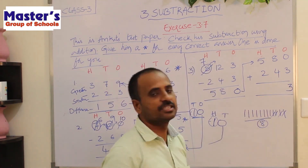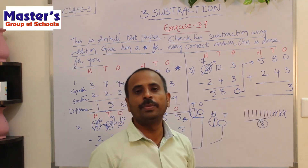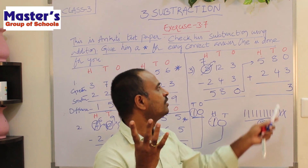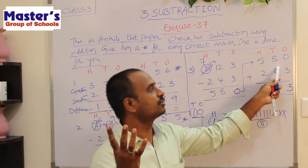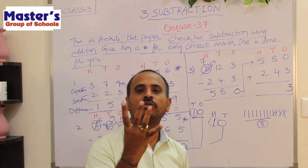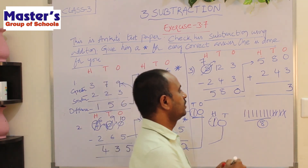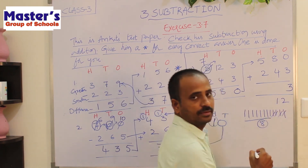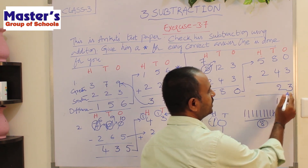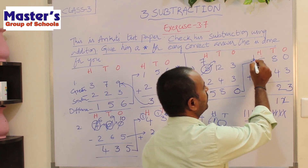Open 4 fingers, start counting after 8: 9, 10, 11, 12. The sum is 12 — write 2 in tens place and carry 1 to hundreds place.